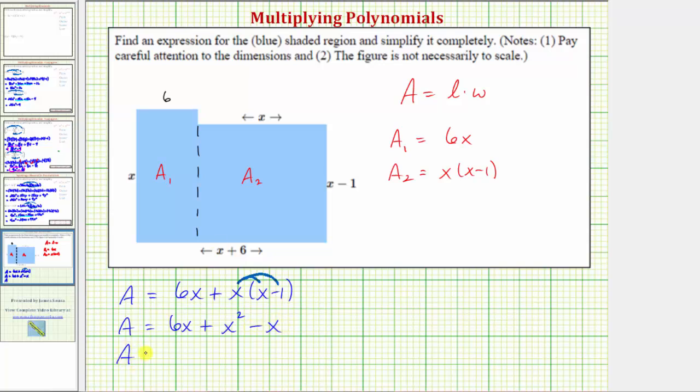Combining like terms, the area is equal to x squared, and six x minus x, or six x minus one x is five x. So the area is equal to the expression x squared plus five x.